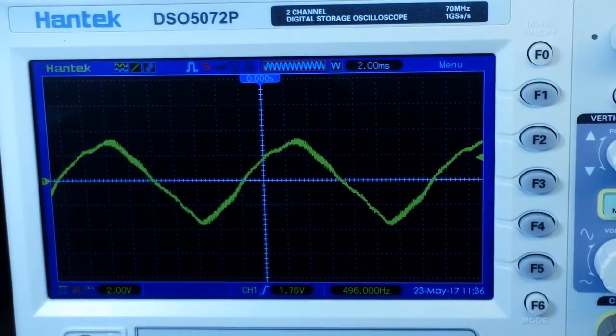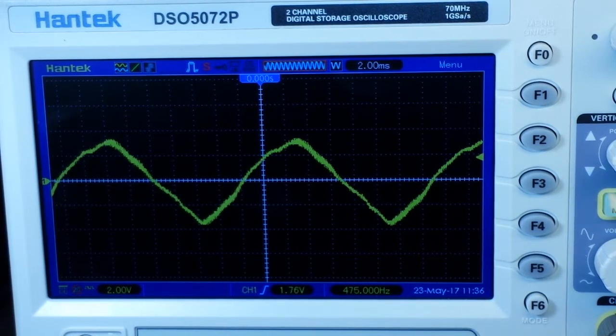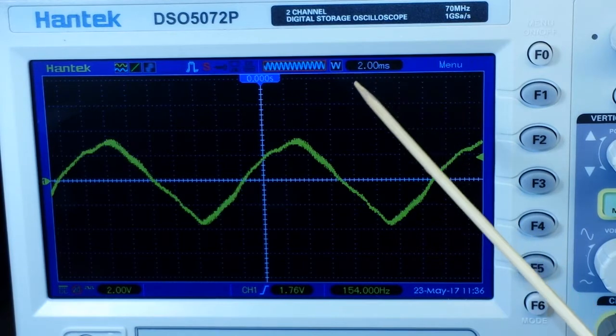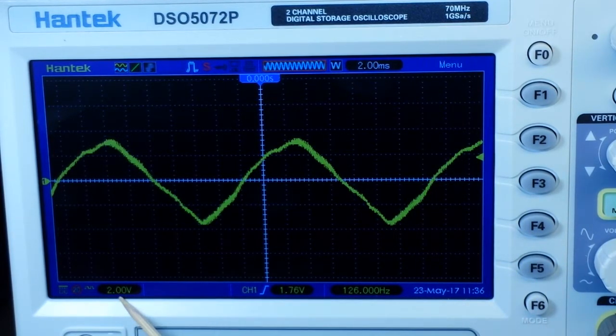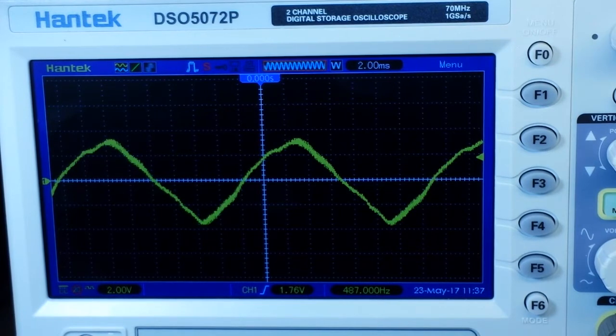So here we have our waveform on the screen and it looks like a triangle wave but it is a form of a sine wave. We have a two millisecond per division time base and two volts per division vertically. We're fluctuating right here around 160 hertz, so that's one way to build a phase shift oscillator using an op amp.